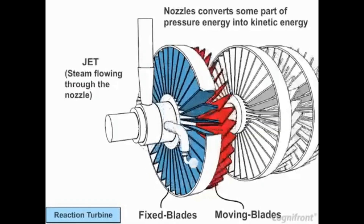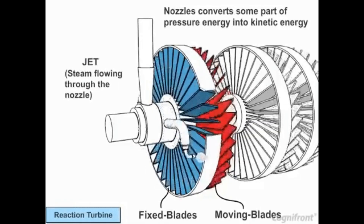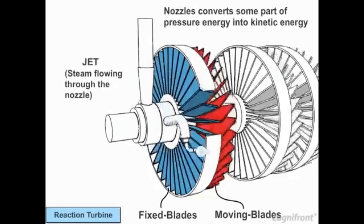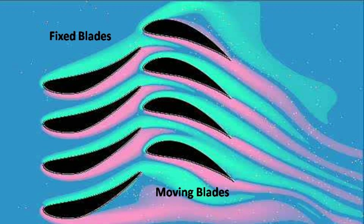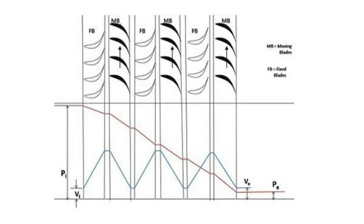A reaction turbine has rows of fixed blades alternating with rows of moving blades. The steam expands first in the fixed blades where it gains some velocity as pressure drops — this can be called the nozzle effect. Then the steam enters the moving blades where its direction of flow changes, thus producing an impulse force on the moving blades. In addition, the steam upon passing through the moving blades again expands and further drops in pressure, giving a reaction force to the blades.